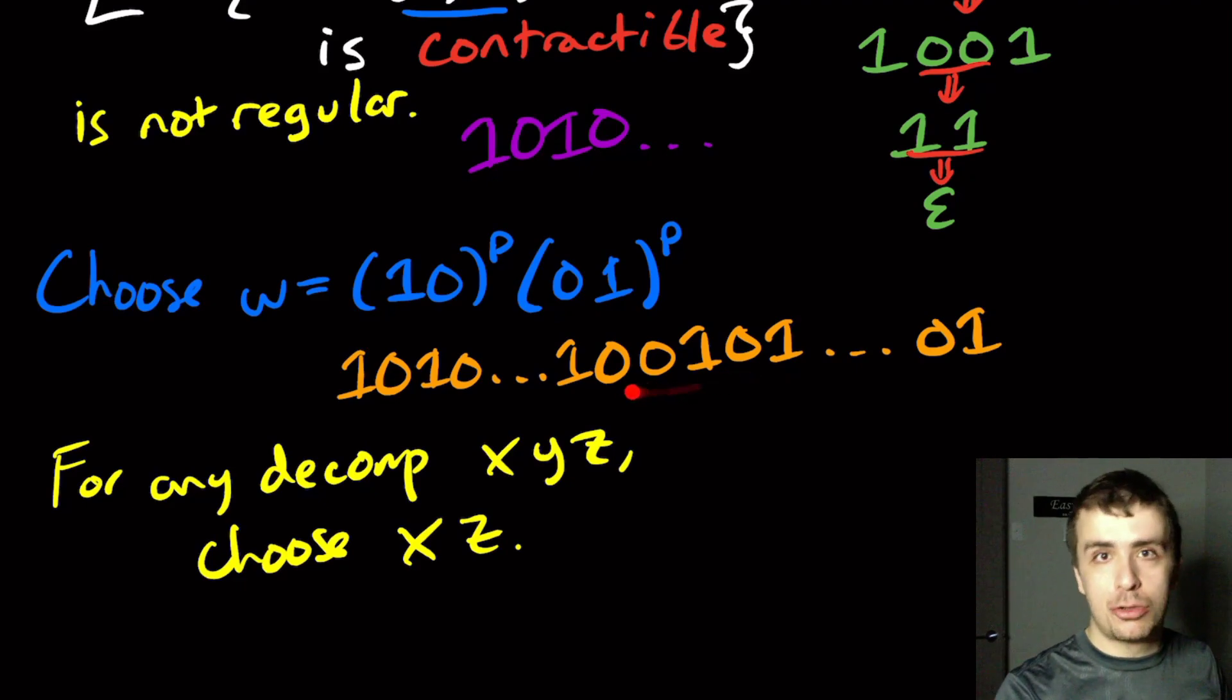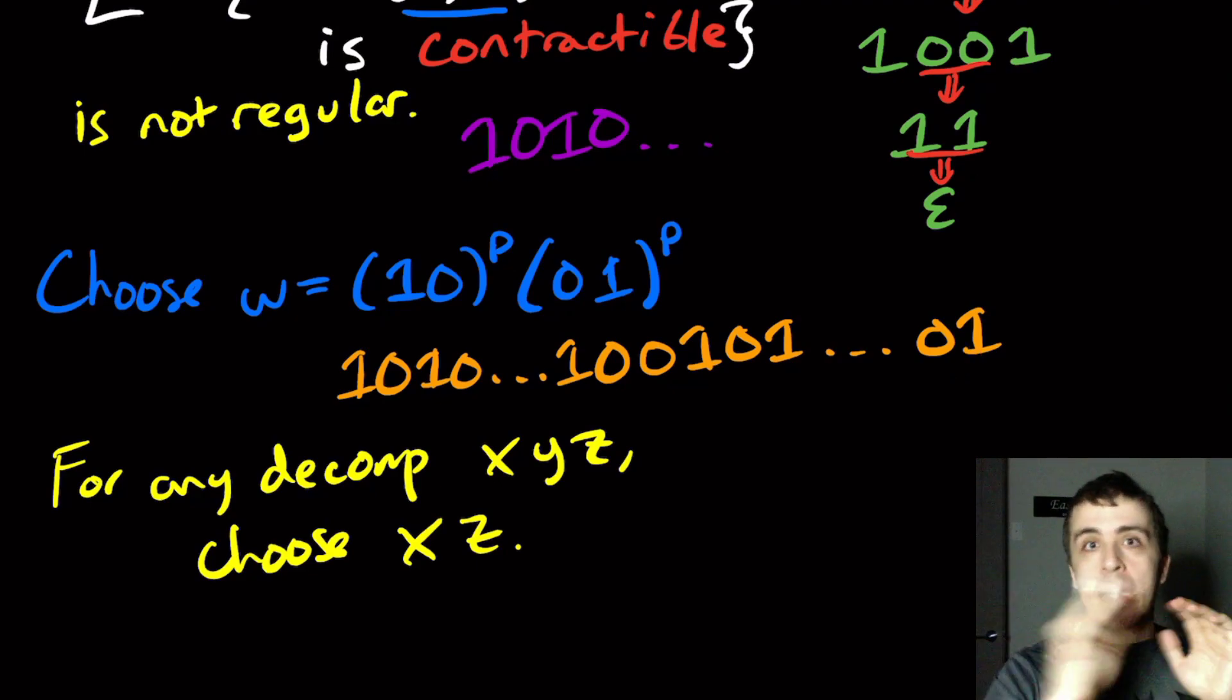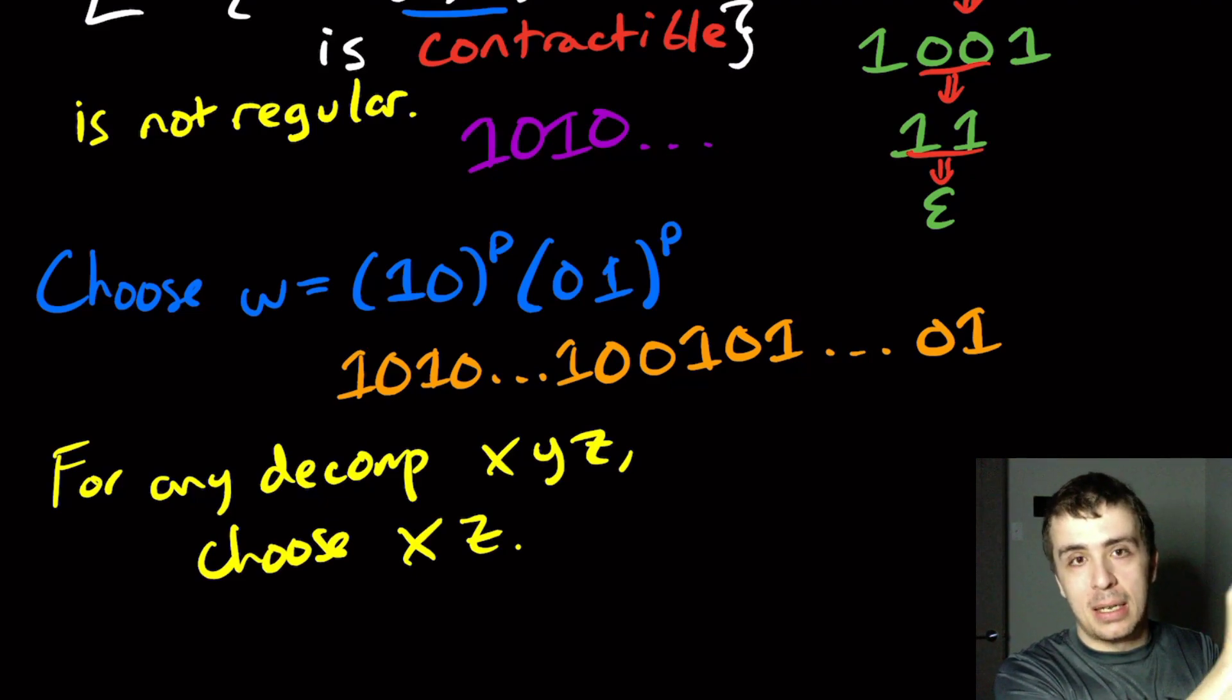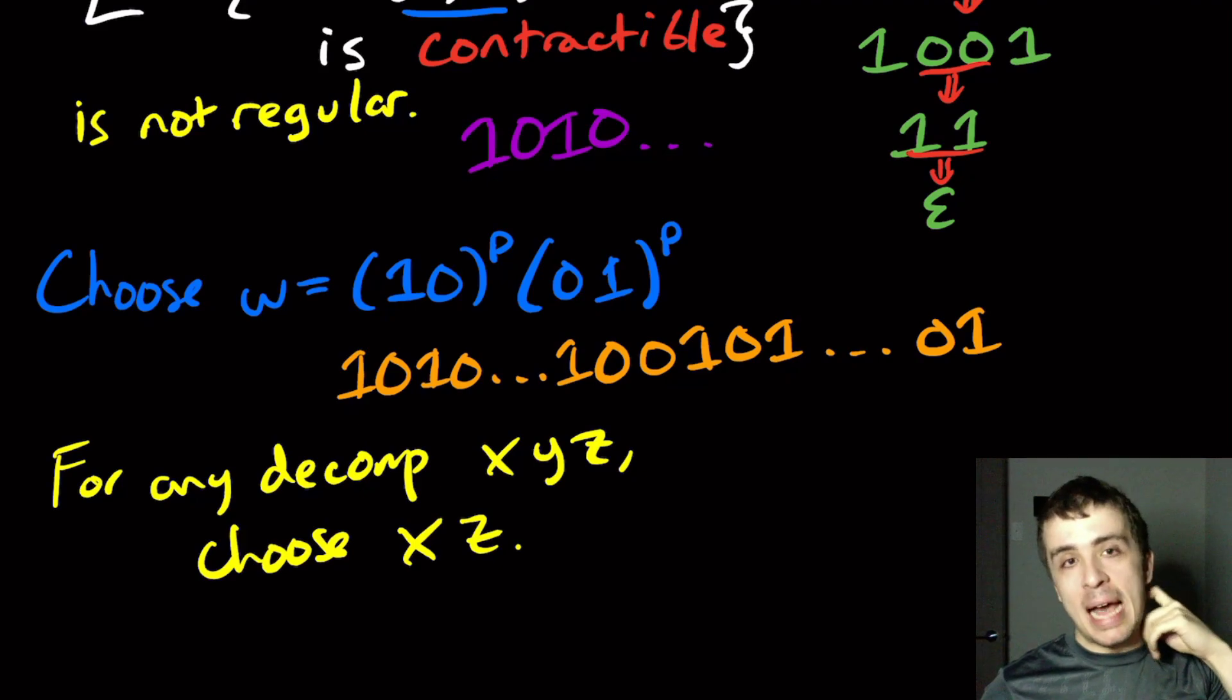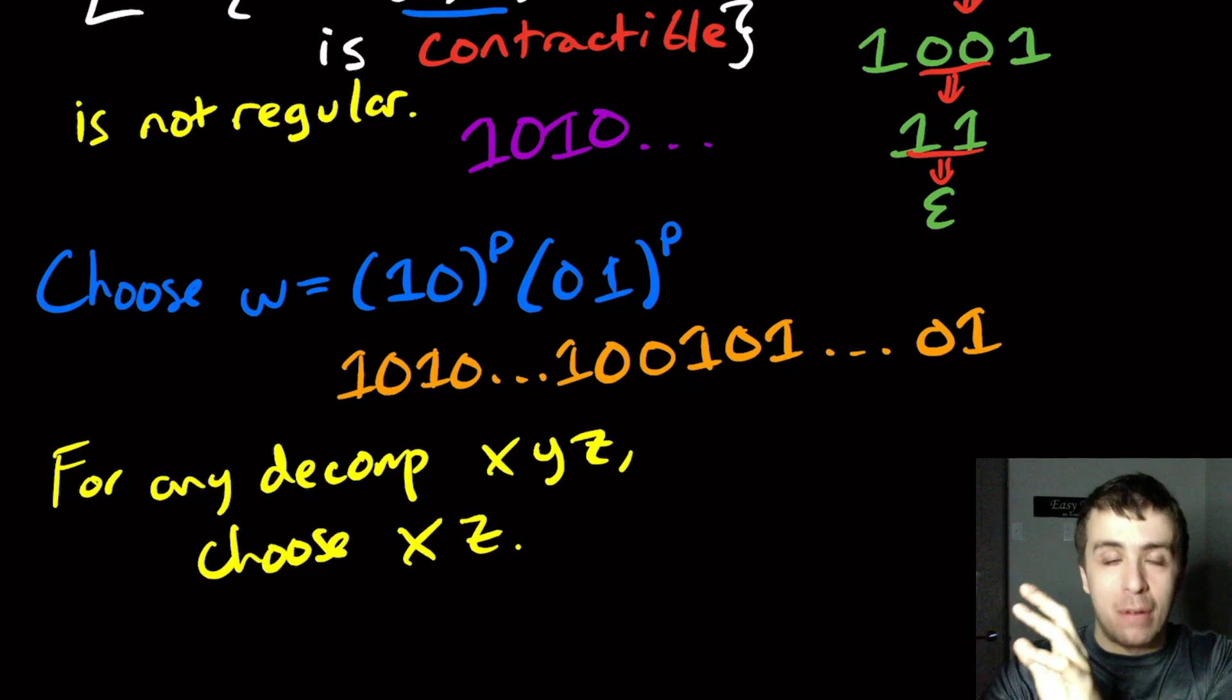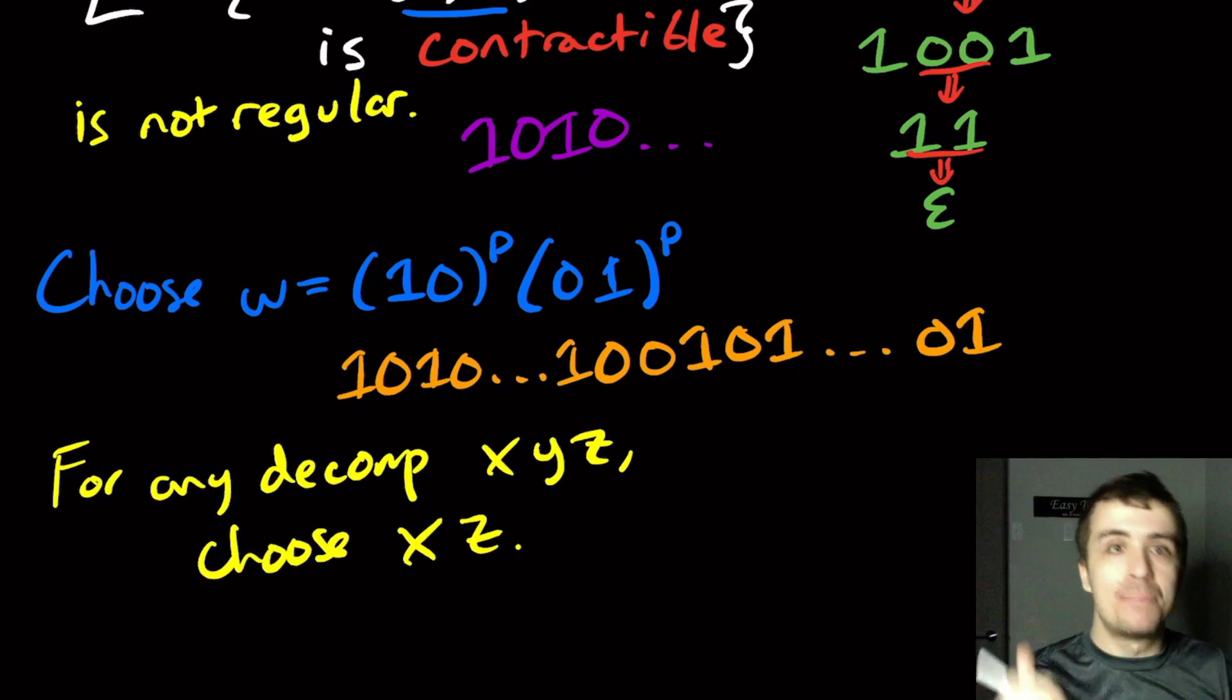In order for this string to be contractible, you need to have—because this is alternating on either side—the (01)^P is not touched at all. The (10) is going to be modified, but the (01) on the other side is not going to be touched. That means that each of the zeros and ones on the right side should be matched with a corresponding thing on the left side. But since we're taking something away, that means something on the right side is not matched with something on the left side.